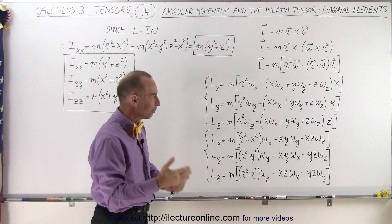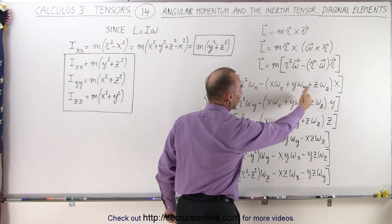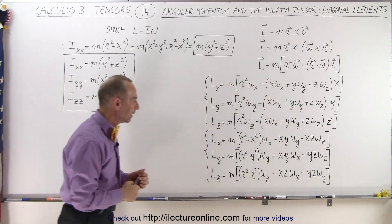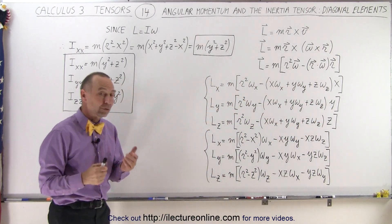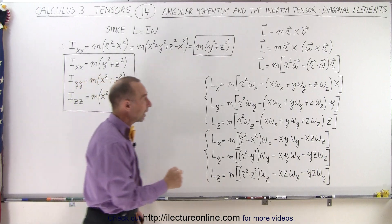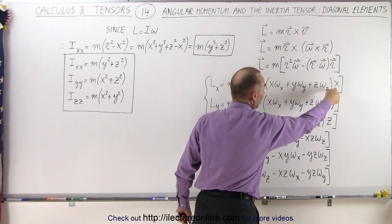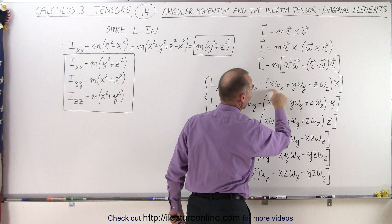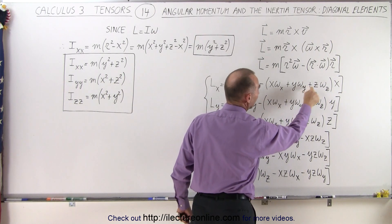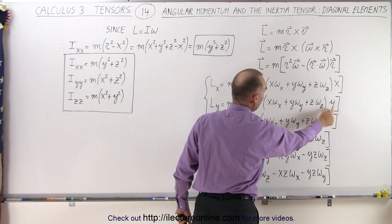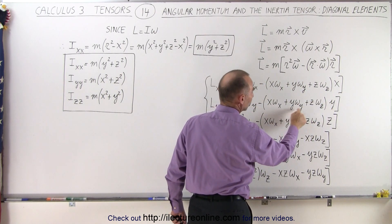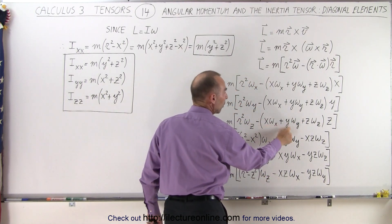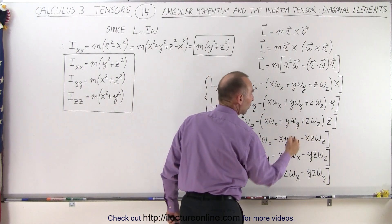And then of course we have the corresponding x, y, and z terms over here. When we multiply these together — multiplying x times each term — we have an x squared, an xy, and an xz. Here we multiply and get xy, y squared, yz. And here we get xz, yz, z squared.